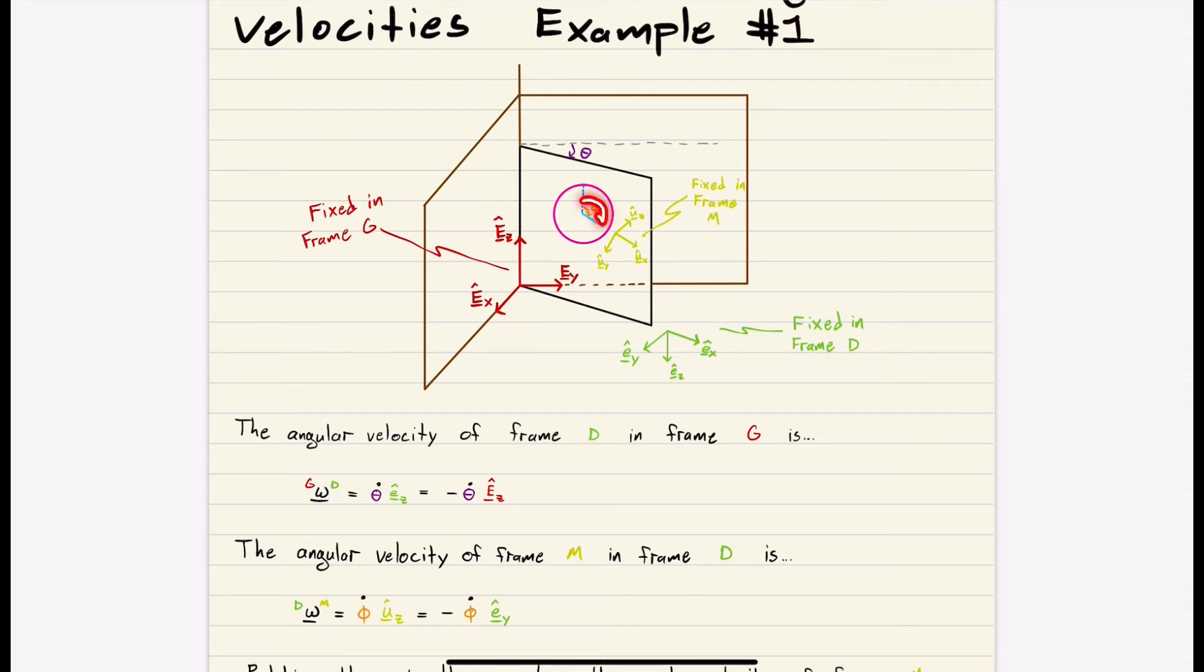It's rotating at a rate of phi dot. The angle off of the vertical is phi. So this minute hand is going around the clock at a rate of phi dot with respect to the door. And this rotation, it is doing a rotation like this about the positive UZ. And that same rotation like this is a negative EY rotation, because UZ and EY are anti-parallel to each other. They point in opposite directions, which is what I have written right here. Phi dot UZ or negative phi dot EY.